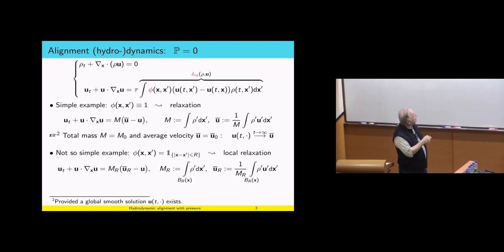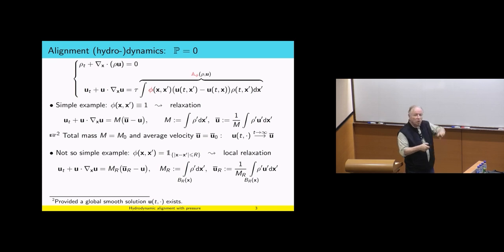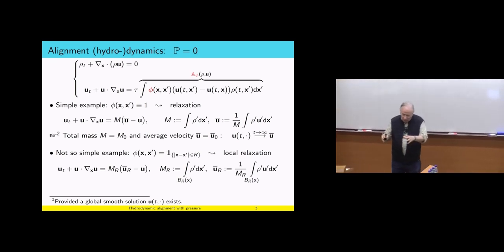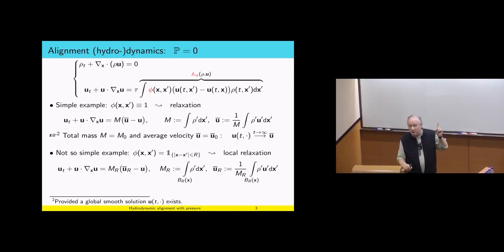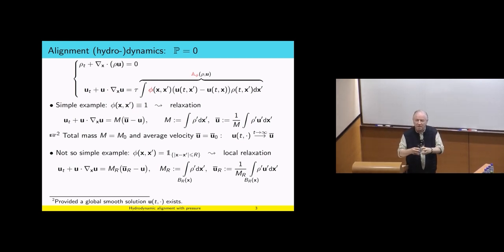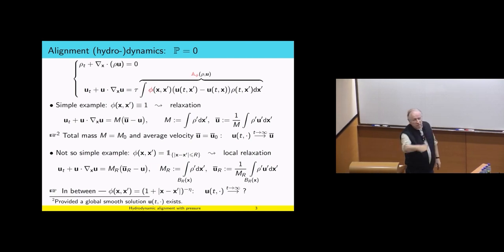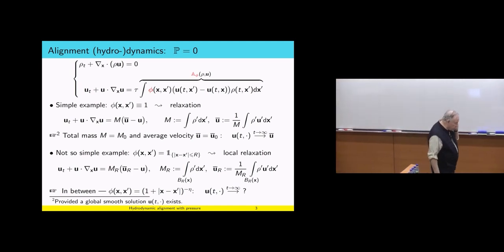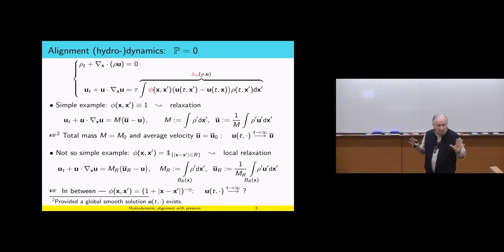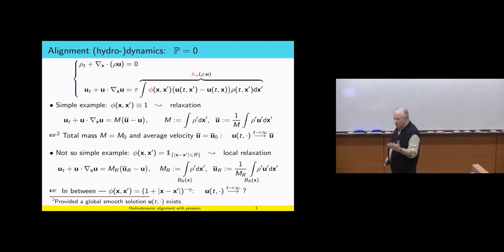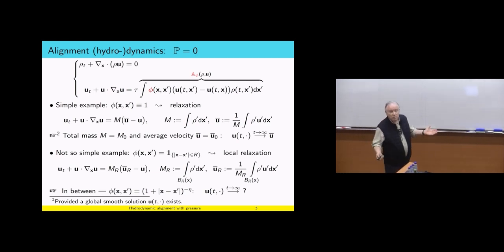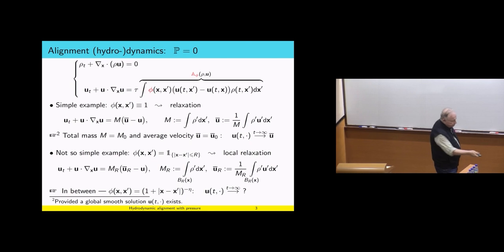Now let's take a not-so-simple example: phi is the characteristic function of a small ball of radius r. You get local averaging — at every point you compare the velocity with local averaging. The large-time behavior is considerably more complicated just because you localize the interaction. In between these two cases, you can take a phi which is slowly decreasing as a function of distance. The big question is what is the large-time behavior of the velocity. I took the pressure to be zero in this case.